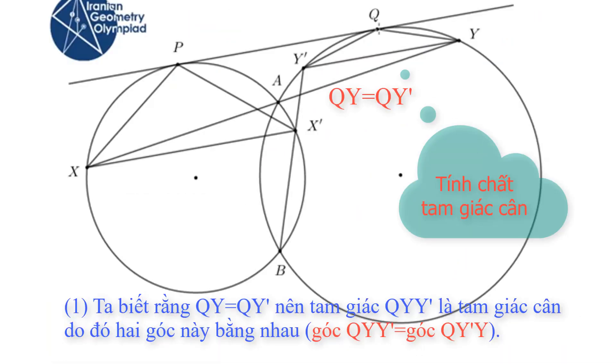We know that QY is equal to QY prime. So triangle QYY prime is isosceles, and these two angles are equal.